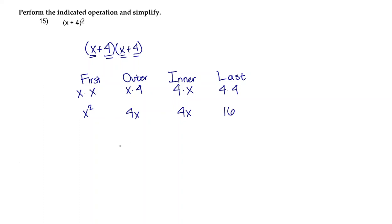When we put that all together, we get x² + 8x + 16. And that is our answer, because the question was just to perform the indicated operation and simplify. We performed the indicated operation, which was multiplication, and then we simplified as much as we could.